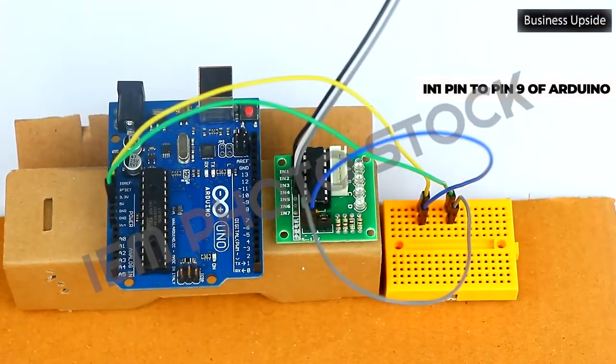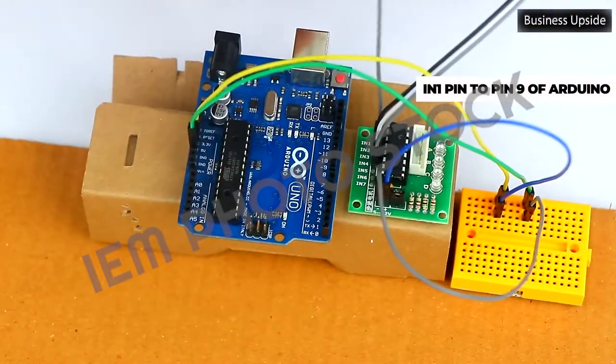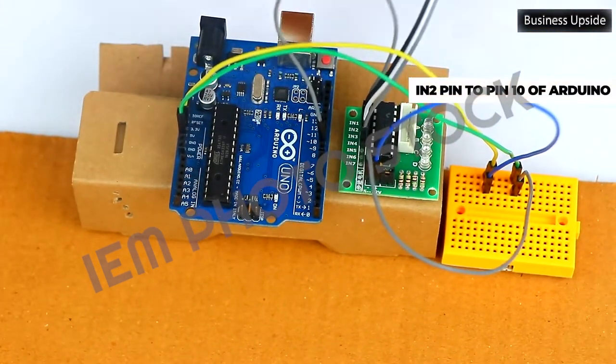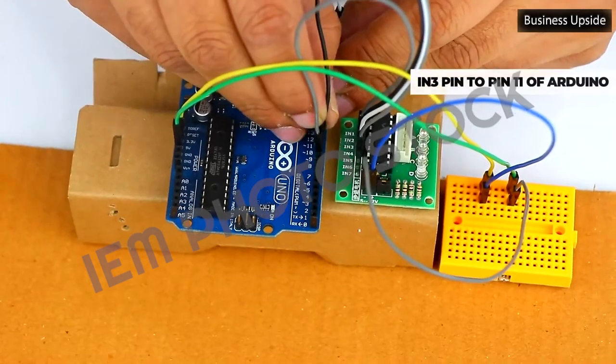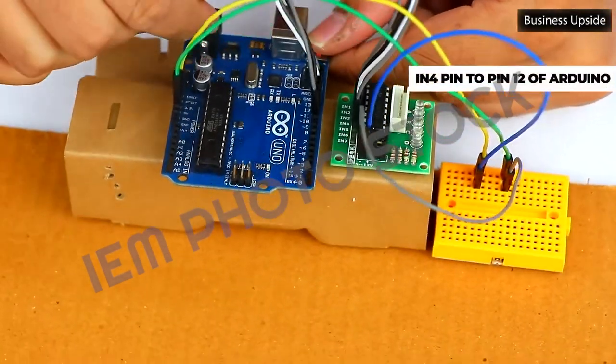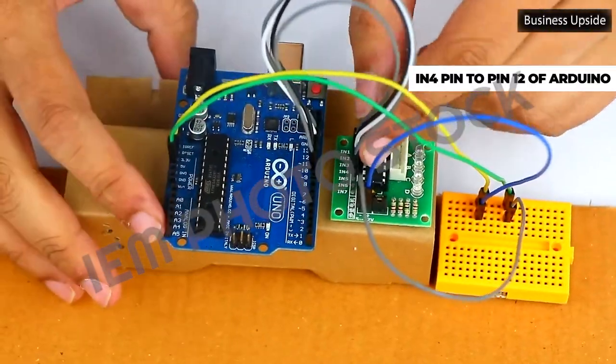Let's connect the IN1 pin of PCB to pin 9 of Arduino. Connect the IN2 pin of PCB to pin 10 of Arduino. Connect the IN3 pin of PCB to pin 11 of Arduino. Connect the IN4 pin of PCB to pin 12 of Arduino.